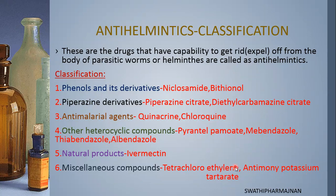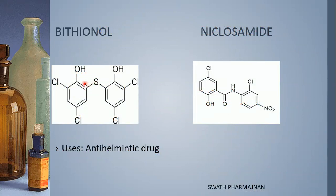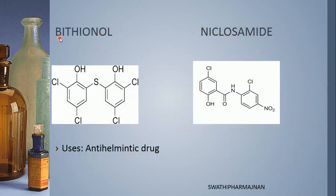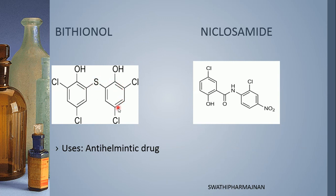Now we will see the structures one by one. The first class of drugs are phenol and its derivatives. The first structures are bithionol and niclosamide. Phenol is a phenyl ring with an OH group. In bithionol, two phenols are present — that is why it is a phenol derivative. Thio indicates sulfur, so two phenols are linked with a sulfur atom.